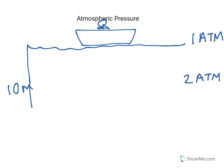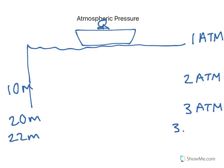So at 20 meters we would be at three atmospheres. Looking at it even more precisely, let's say we did a dive to 22 meters — we would be at 3.2 atmospheres.